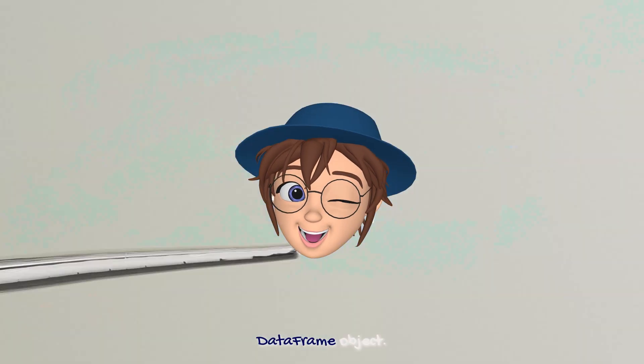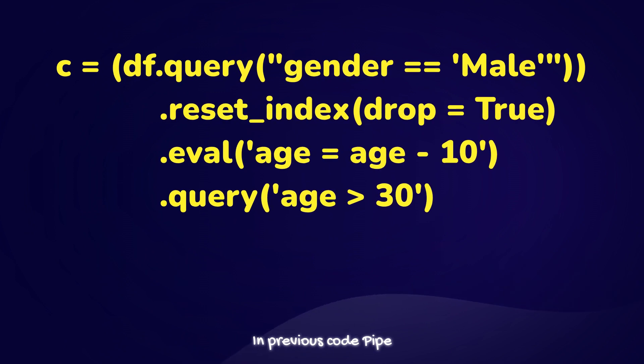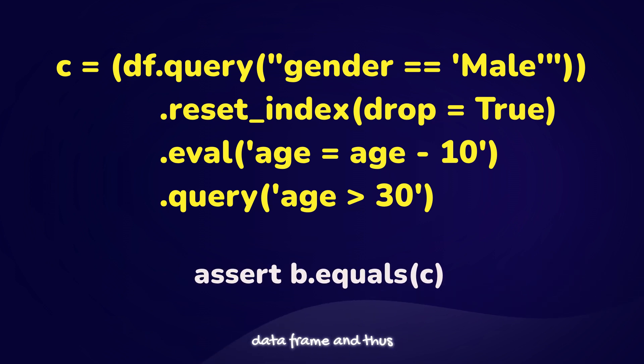In previous code, pipe function is used twice and it gets a bit cumbersome and could get even worse with longer expressions. The advantage with query and eval is that it will refer to columns inside the current dataframe, and thus there is no need to use pipe function.